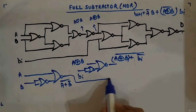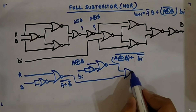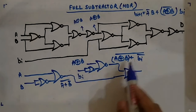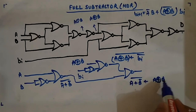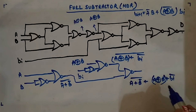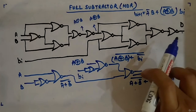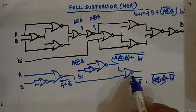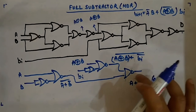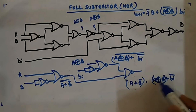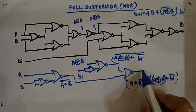Take this output and this output and apply them to a NOR gate. What you get is the XNOR of these two: ((A + B_bar)_bar + (A XOR B + Bi_bar))_bar. I can remove the outer bar using De Morgan's law - the double bar terms cancel, giving two individual terms.